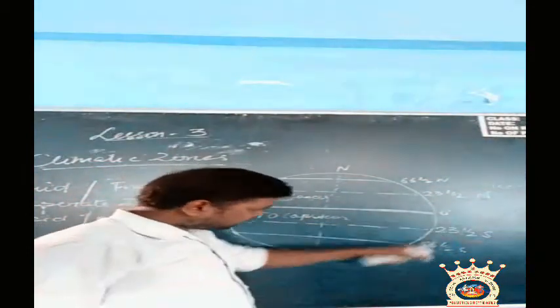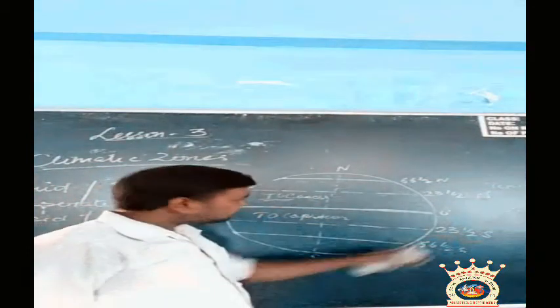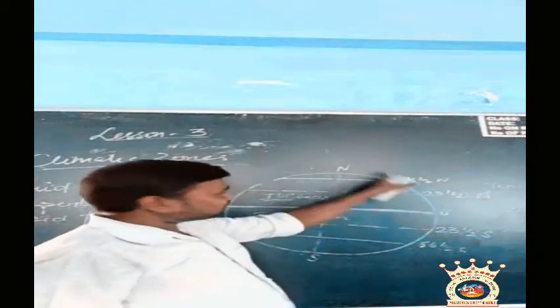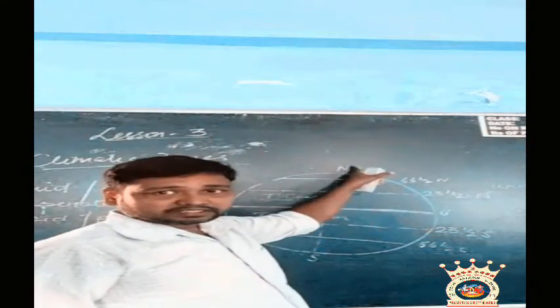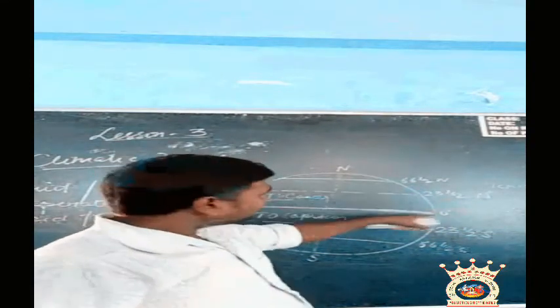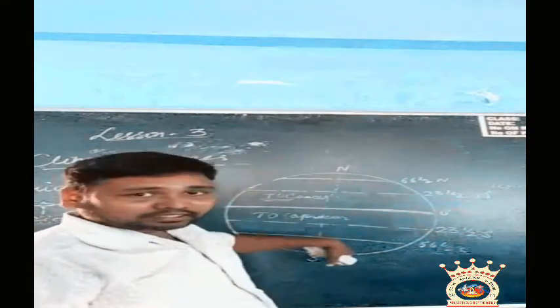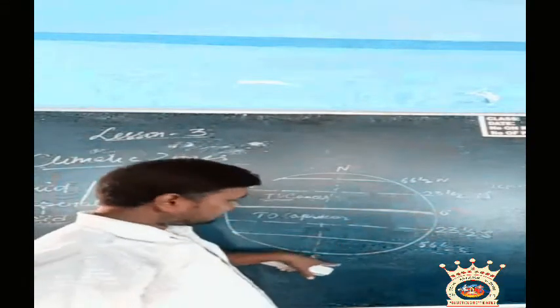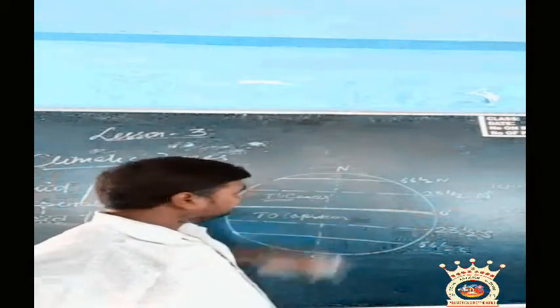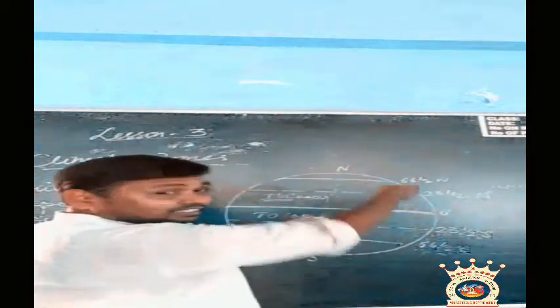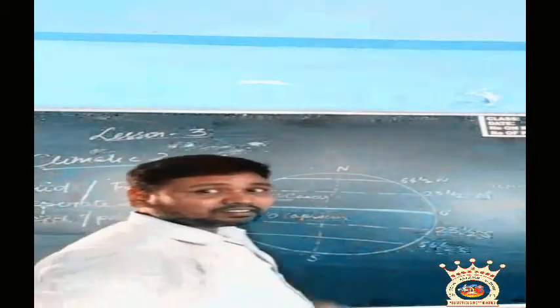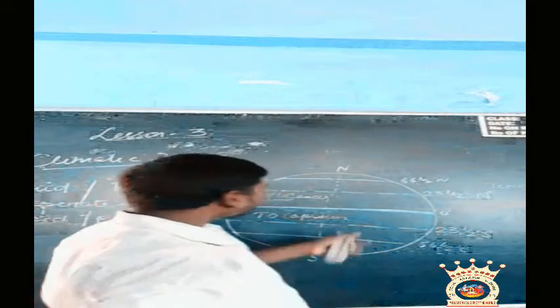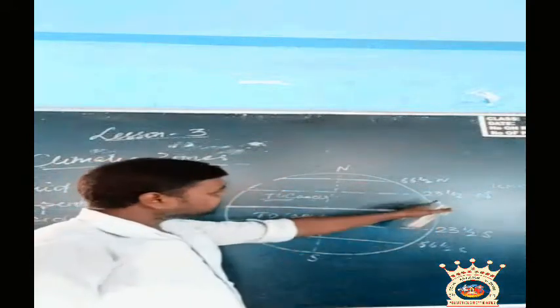The degrees are counted going outward from the equator. On each side it goes up to 90 degrees — 90 degrees north on one side and 90 degrees on the other side.